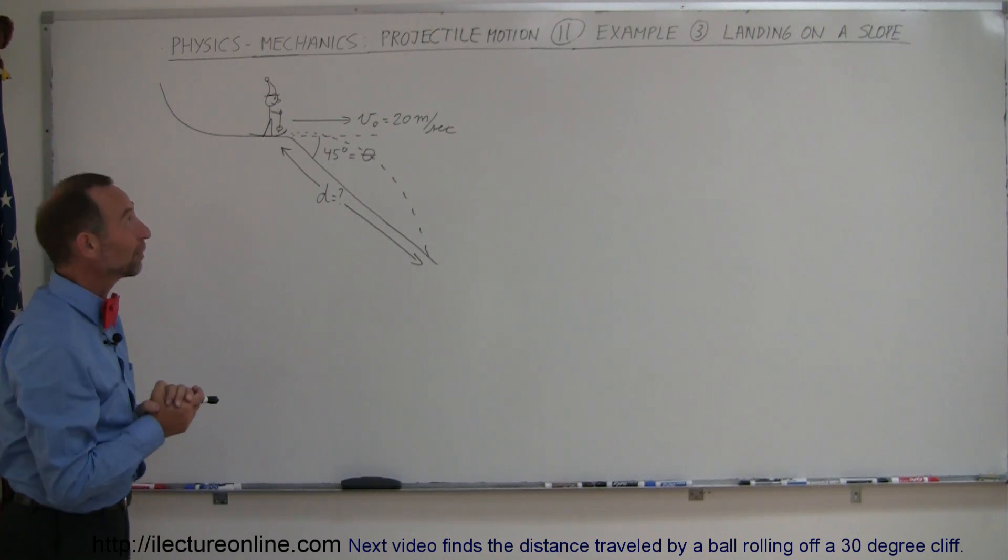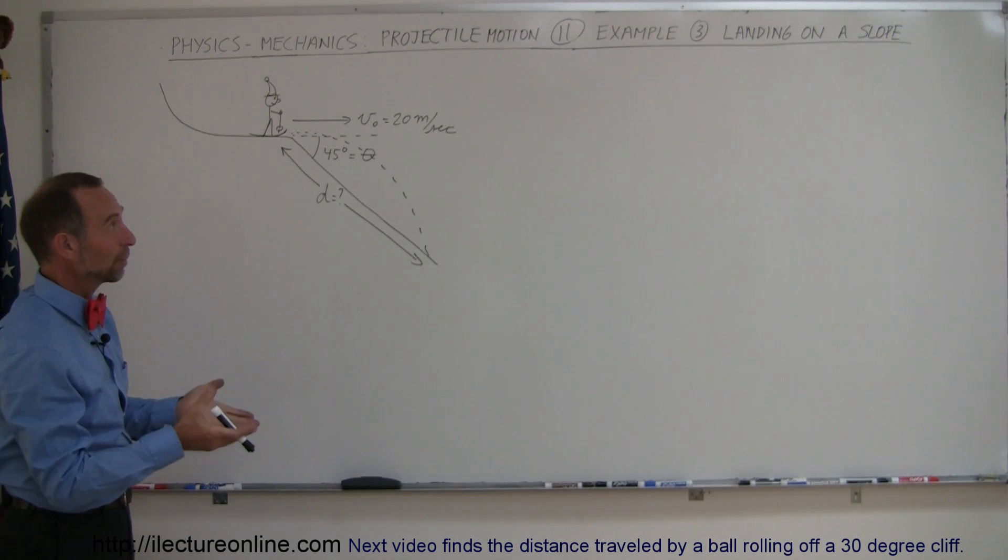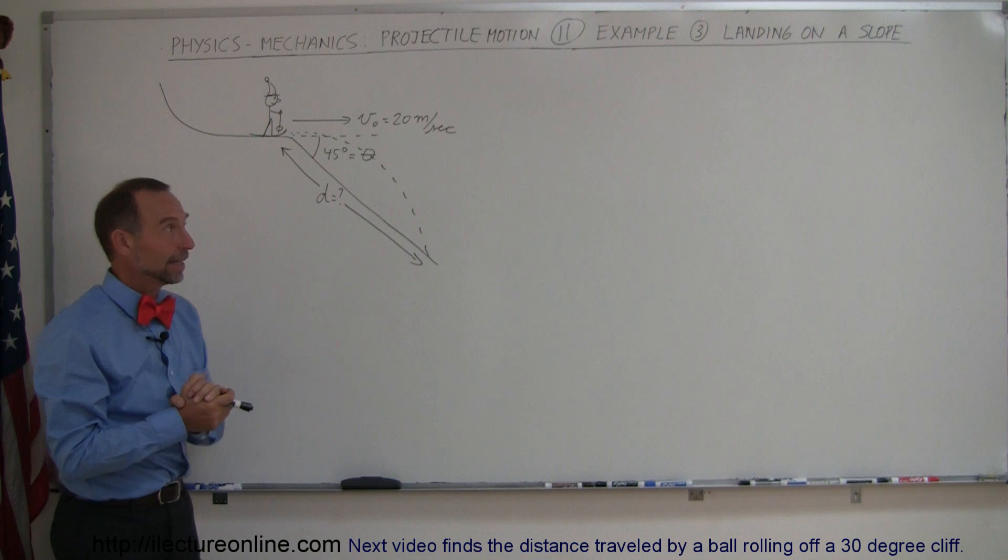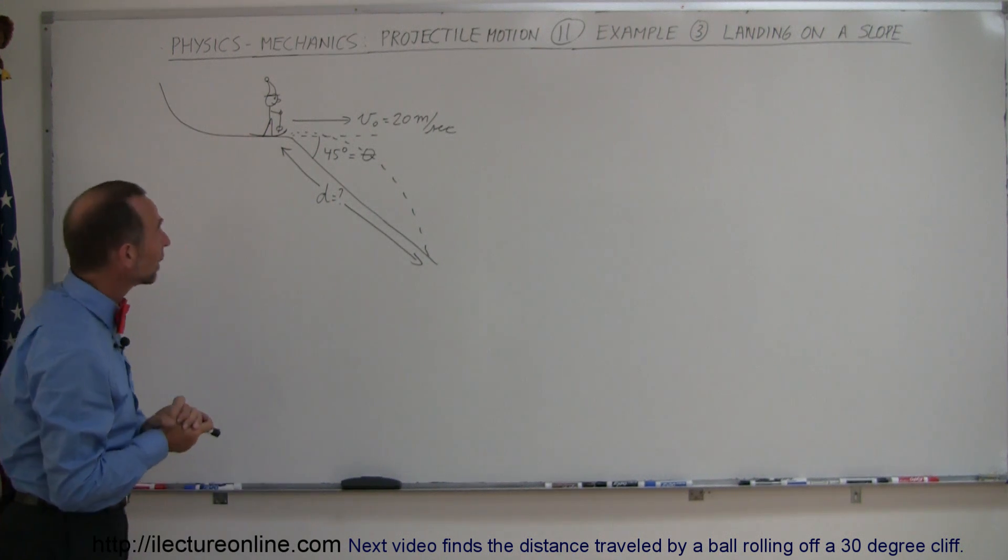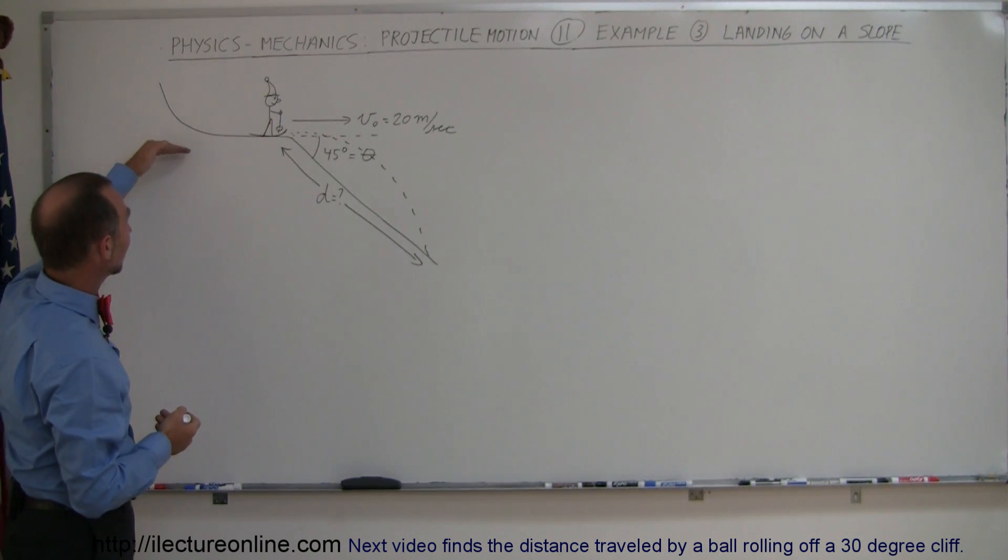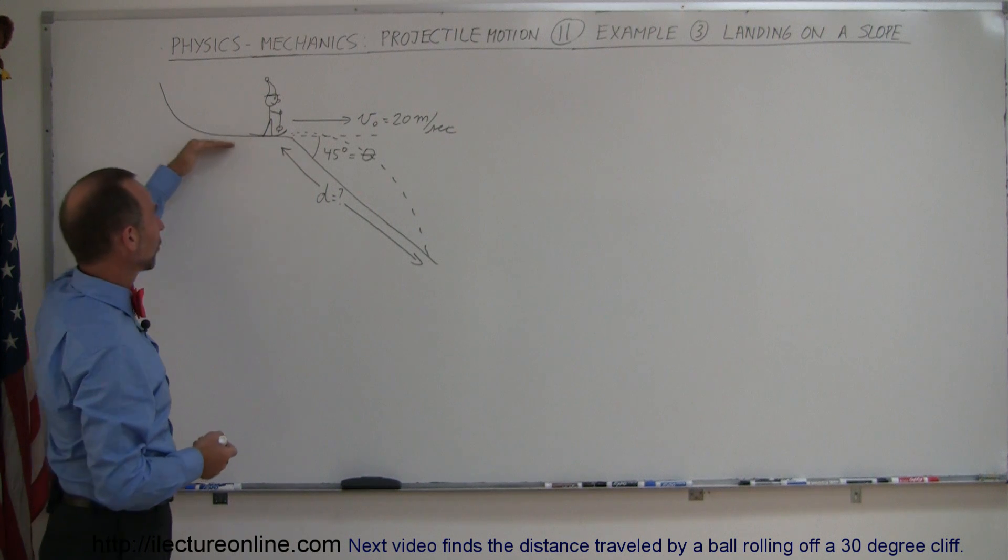And here's another interesting example of how to solve a projectile motion problem in two dimensions. Landing on a slope, and here's a skier coming down a steep cliff, small horizontal part,